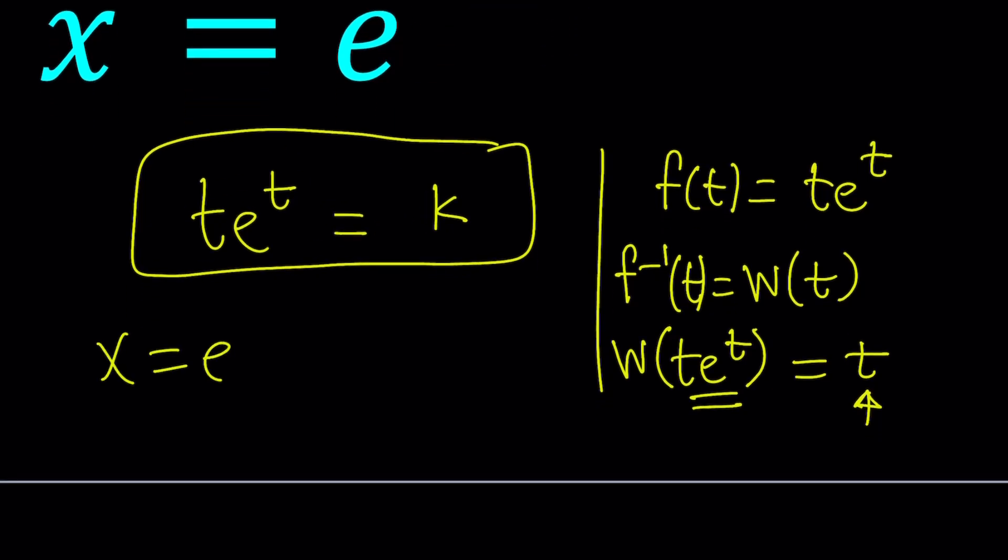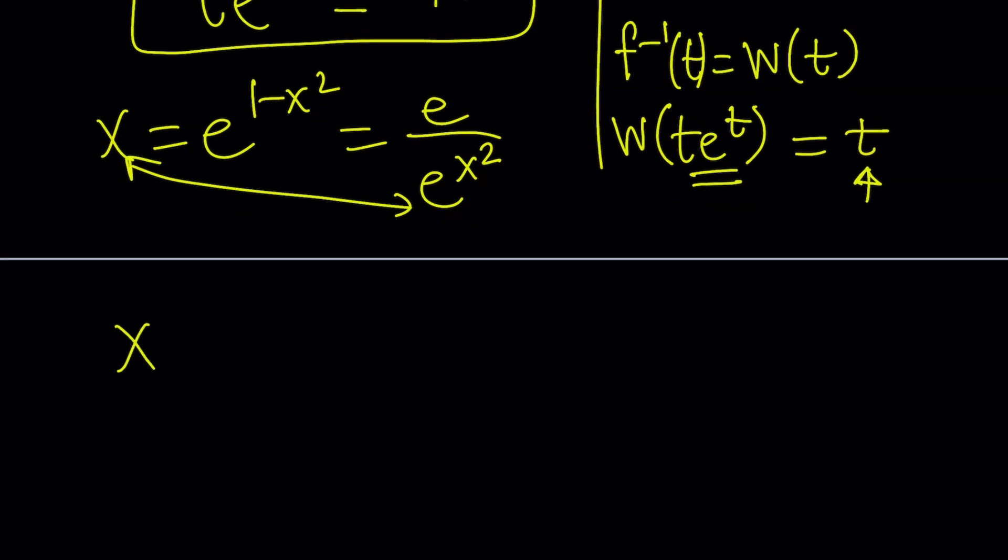x equals e to the power 1 minus x squared which can be written as e over e to the power x squared. Let's go ahead and cross multiply. That's going to give us x times e to the power x squared equals e. Wow we're so close right?